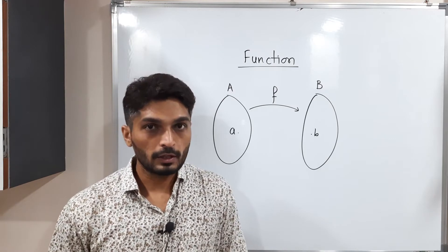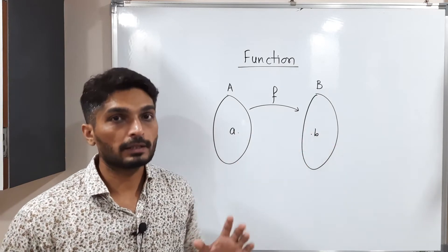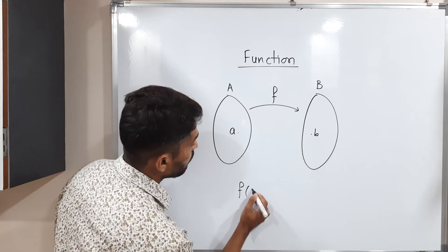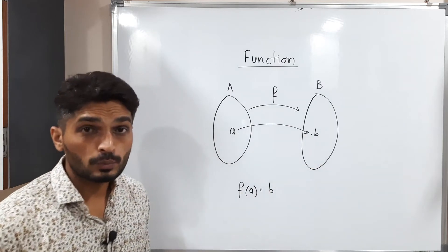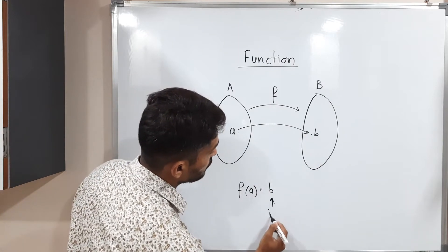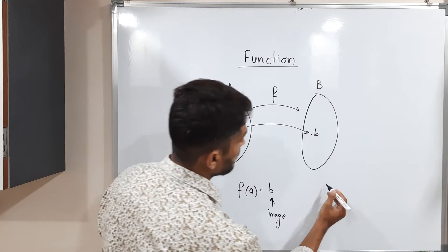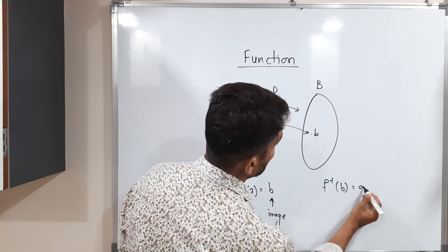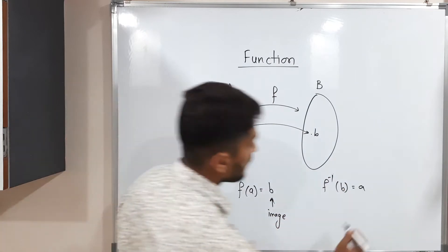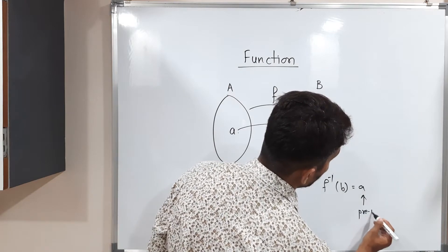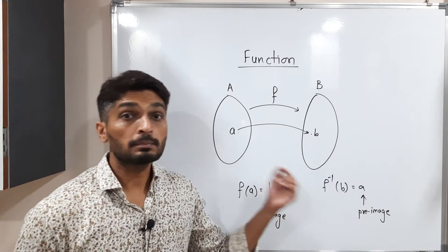Suppose we have some element a from set A and some element b from set B, and f(a) = b, meaning a is mapping to b. In that case, we say b is the image of a. We can also write this as f⁻¹(b) = a, and in that case we say a is the pre-image of b.